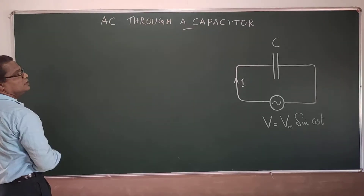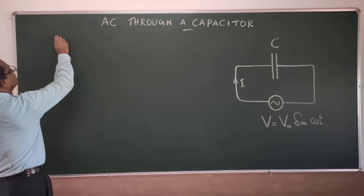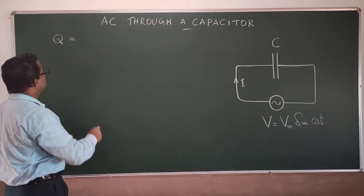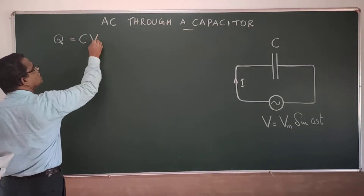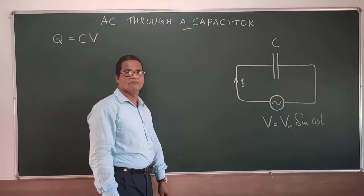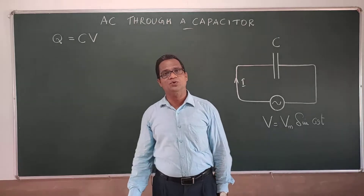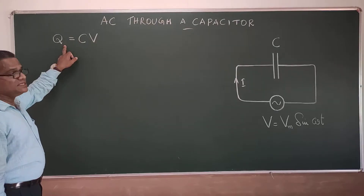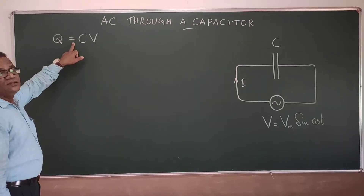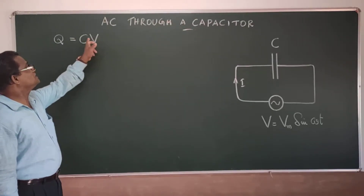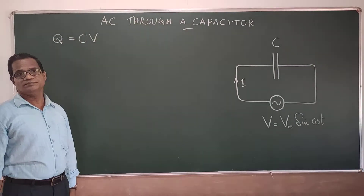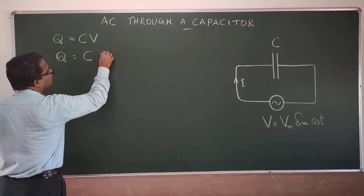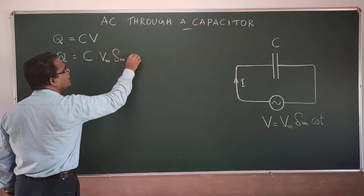Therefore, we can consider the charging and discharging and according to the capacitor equation, at any instant, the charge of the capacitor is equal to C into V. This is the capacitor equation you studied in electrostatics. So at any instant, the charge Q is equal to C into V, where V is the instantaneous voltage being applied. Therefore, Q = C·Vm sin ωt.